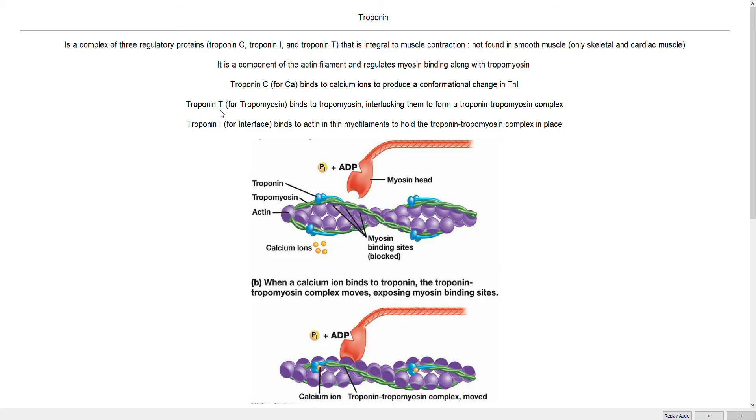Next we have troponin T. Troponin T binds tropomyosin, so it keeps troponin and tropomyosin linked. So when proteins are linked, their actions are linked. So this will allow the troponin to move and maneuver tropomyosin around.